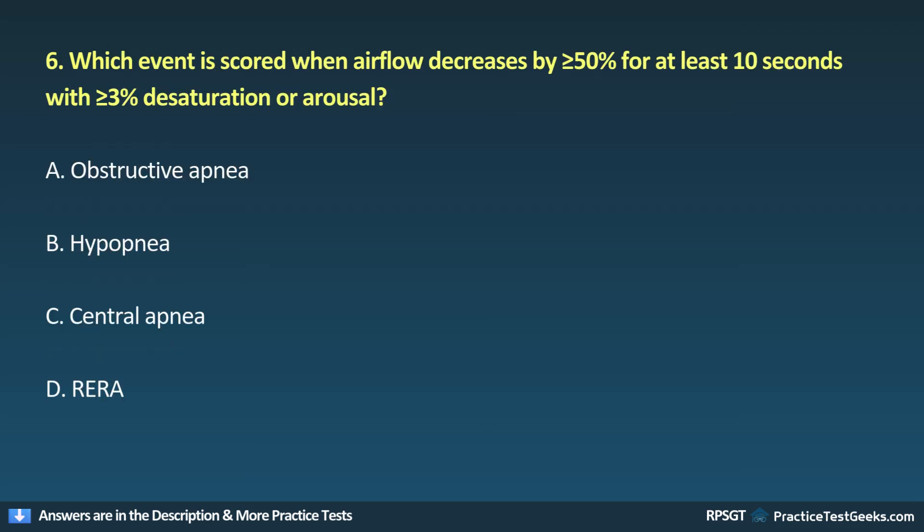Question 6: Which event is scored when airflow decreases by more than 50% for at least 10 seconds with more than 3% desaturation or arousal?